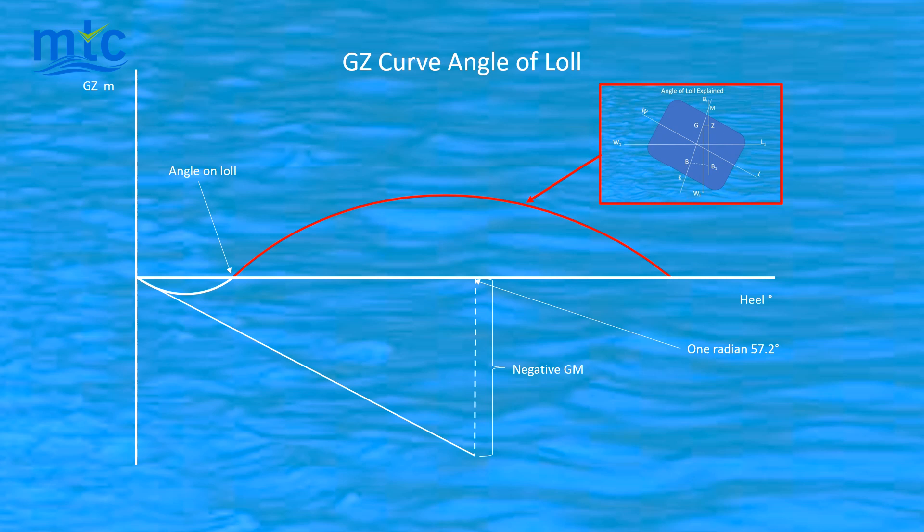Note, the area under the GZ curve is a lot less than normal, as the curve is flattened and consequently, the vessel has lost a lot of dynamic stability.